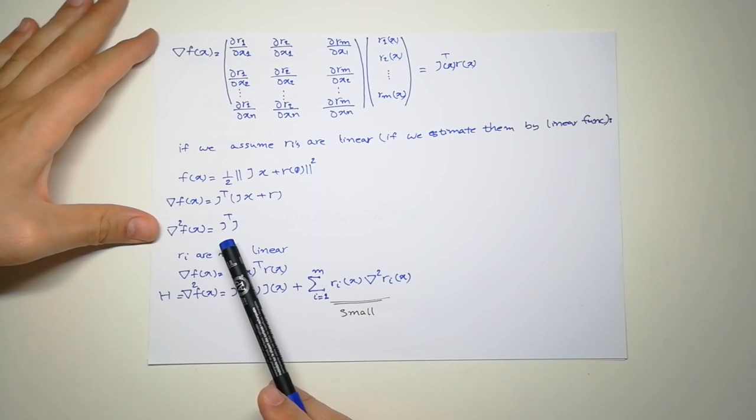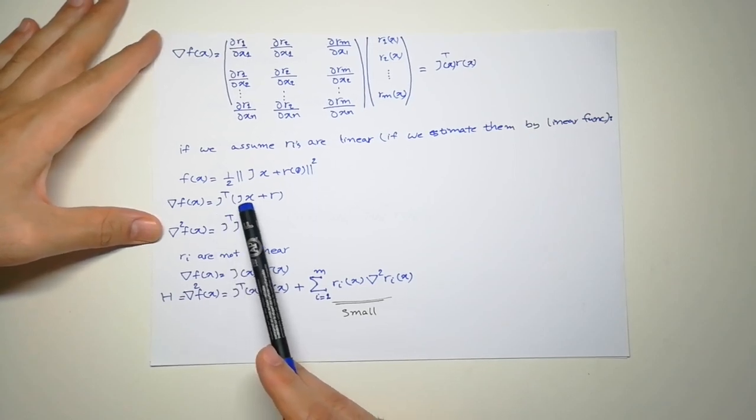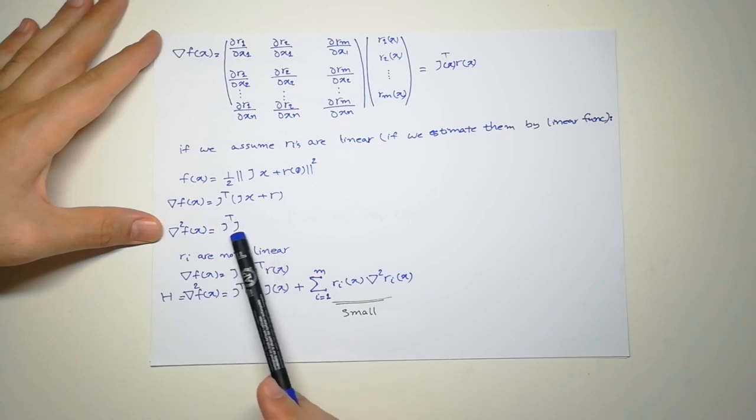And the second derivative is going to be just the coefficient of X, which is J transpose J.